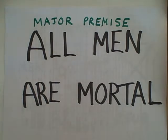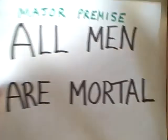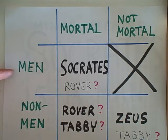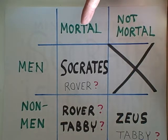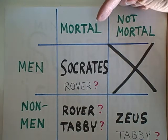Let's start out with our old familiar major premise: all men are mortal. We're going to draw our 2 by 2 contingency table so that our subject defines the rows — one row for men and one row for non-men. We're going to let our predicate, being mortal, define our columns — one column for things that are mortal and one for things that are not mortal. Every case will be classified as man or not man, mortal or not mortal.